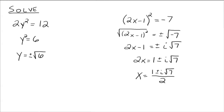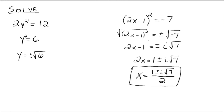There are two numbers here: we have 1 plus i radical 7 all divided by 2, and we have 1 minus i radical 7 all divided by 2. The plus or minus symbol is just shorthand notation for writing both solutions at the same time. That's the idea of the square root property — look for something squared equals a real number, take the square root of both sides, and don't forget the plus or minus. Study well!